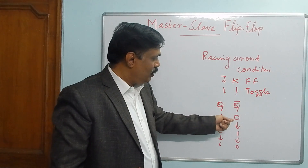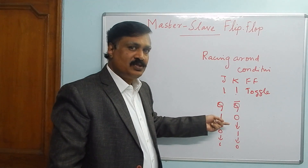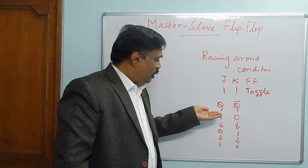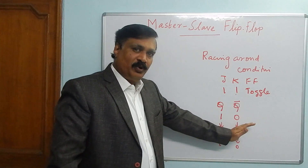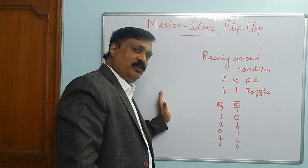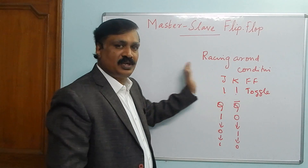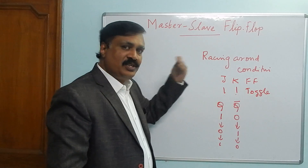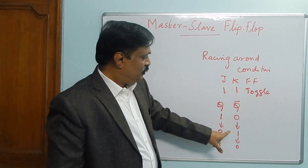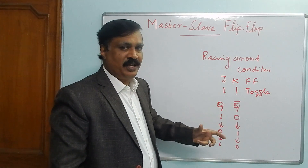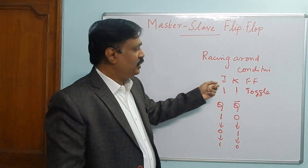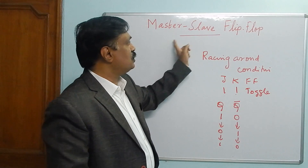Why is it called racing around condition? Because when you give one-one to JK flip-flop, the output is changing from one to zero and Q-bar from zero to one. Due to the clock pulse and the presence of one-one, toggling occurs through the circuit via the feedback connection. The change in output causes change in input, and the change in input causes change in output, therefore the change keeps taking place around the circuit. That is the demerit of JK flip-flop, and this demerit is removed in master-slave flip-flop.